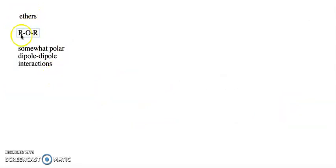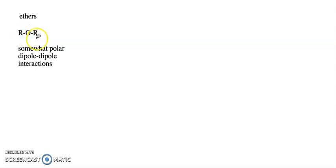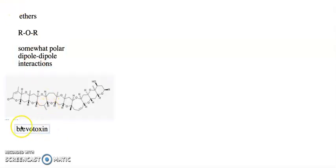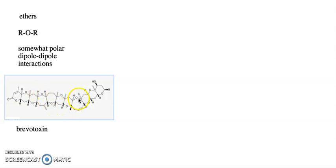Ethers have this general structure of two R groups surrounding an oxygen. They tend to be somewhat polar with dipole-dipole interactions, since the oxygen is more polar than the carbons attached to it. One interesting example is brevitoxin, an incredibly toxic marine natural product that has multiple ether linkages — it's a polyether. There are many examples of biologically interesting ethers.